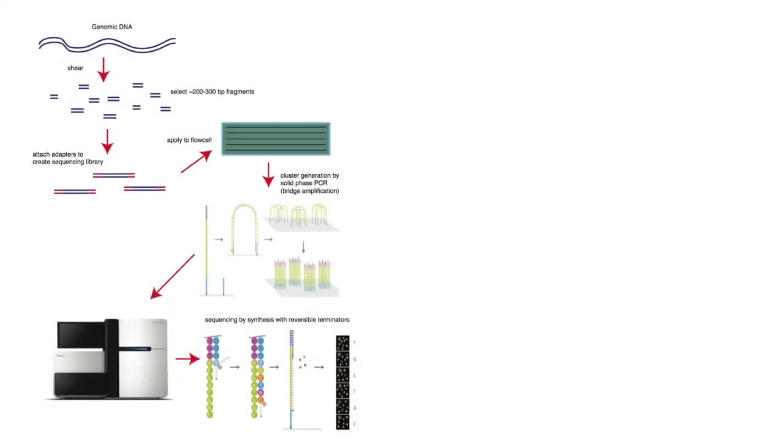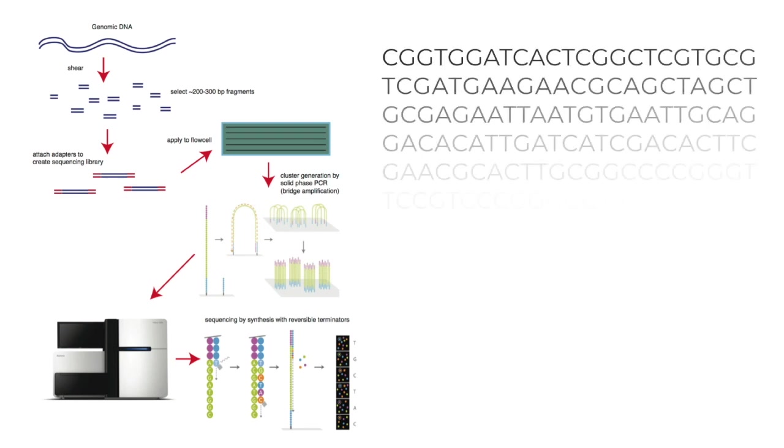NGS technology captures DNA sequences and generates digital data using several steps. First, RNA extracted from cells is converted into cDNA that is then sheared and placed into a flow cell. Inside the flow cell, cDNA fragments are amplified using bridge PCR amplification, and the flow cell is then inserted into the sequencer. This machine uses image analysis to capture each letter in the flow cell fragments by analyzing visual patterns and converting them into a sequence of letters.